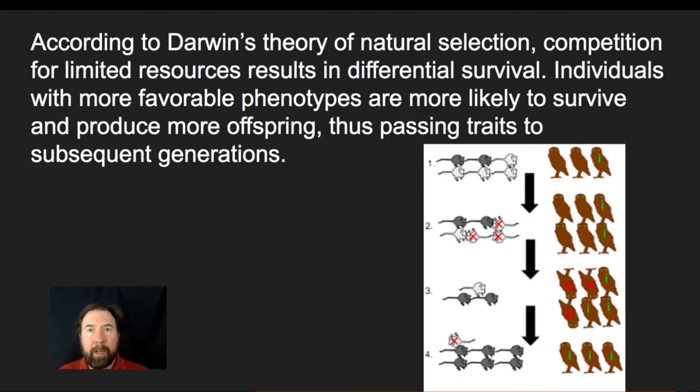According to Darwin's theory of natural selection, it's really important to talk about competition for limited resources and differential survival. Individuals with more favorable phenotypes are more likely to reproduce over time. The offspring then have traits that allow them to survive.